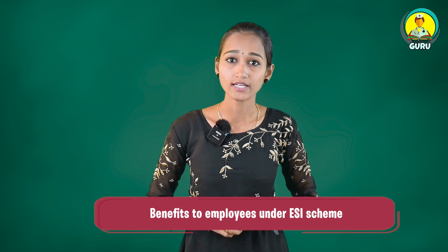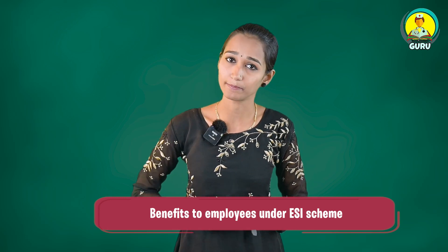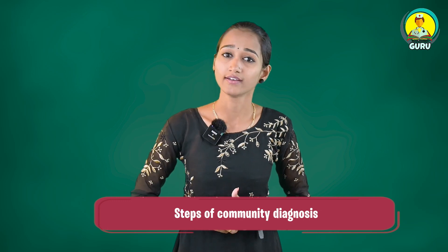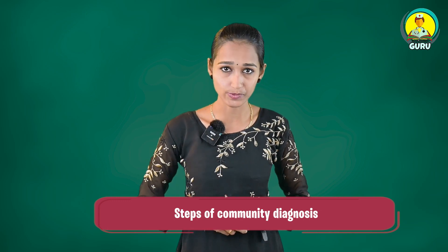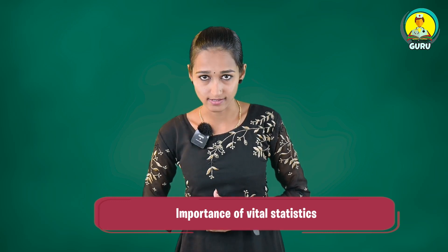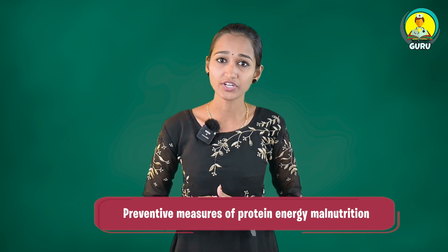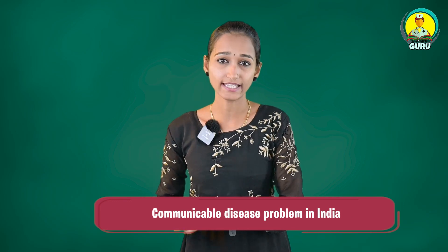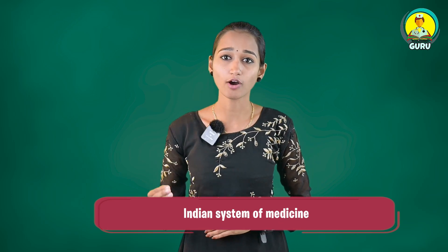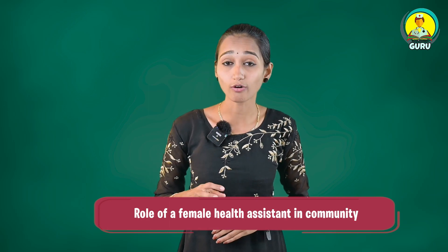Eighth question: Work of World Health Organization. Ninth question: Barriers of communication. Tenth question: Indian Red Cross. Eleventh question: Benefits of employees under ESI scheme. Next question: Rules and regulations of MTP Act 1971. Next question: Steps of community diagnosis. Fourteenth question: Importance of vital statistics. Fifteenth question: Preventive measures of protein energy malnutrition. Sixteenth question: Communicable disease problem in India. Seventeenth question: Public health legislation. Eighteenth question: Indian system of medicine.